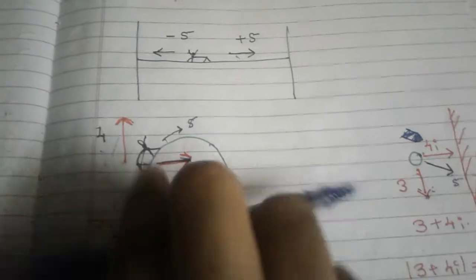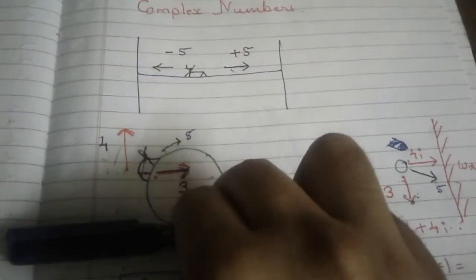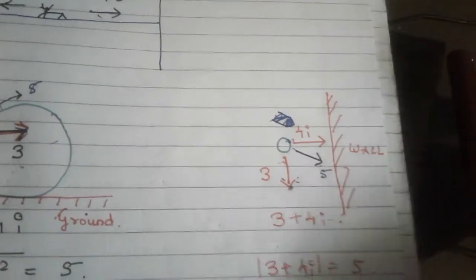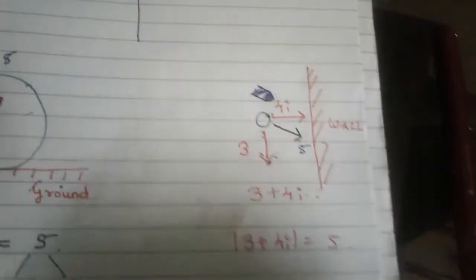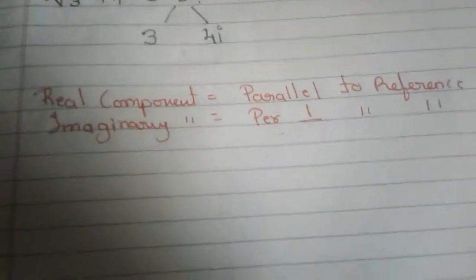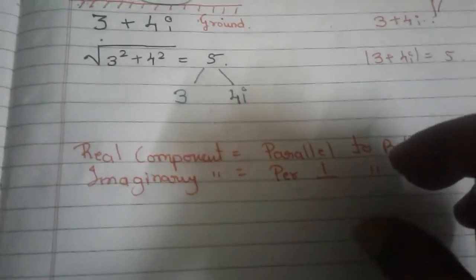Just notice that in the previous case the real component was a horizontal line, but it was called the real component because it runs parallel to the ground — not because it is horizontal. In this new case the real component runs parallel to the reference surface, which is a wall. So the real component is that which runs parallel to the reference surface, and the imaginary component is that which runs perpendicular to the reference surface.